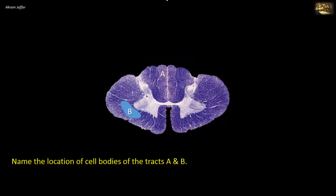Name the location of cell bodies of tracts A and B. Tract A is located in the dorsal funiculus, medially — these are fibers of the fasciculus gracilis. Whether fasciculus gracilis or the laterally located fasciculus cuneatus, both tracts convey the same modalities of sensation: sensations from the lower limb ascend in the fasciculus gracilis, while sensations from the upper limb ascend in the fasciculus cuneatus. The fibers in either tract are first-order neurons, with cell bodies located in the dorsal root ganglion.